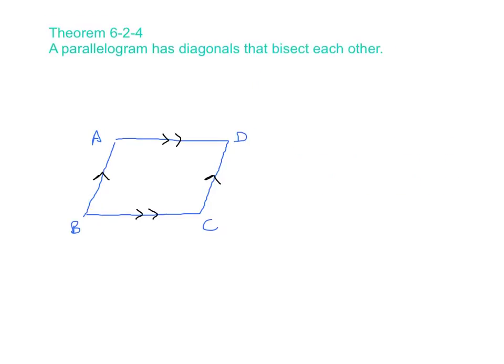Our last theorem we're going to talk about today says that a parallelogram has diagonals that bisect each other. So we need to draw in a diagonal that's from one vertex to another, let's go B to D, and also from A to C. Now, let's call that intersection point, let's call that M.